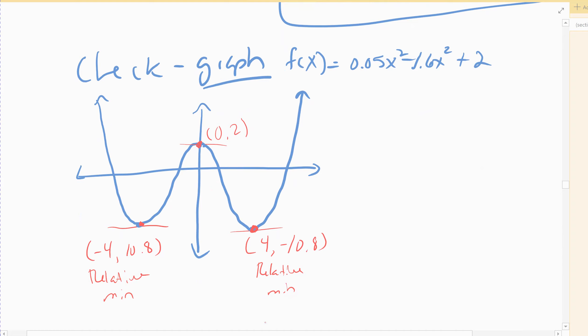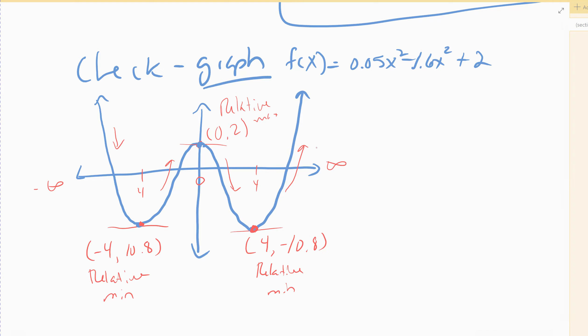If you look at the graph, this is a relative minimum — actually an absolute minimum as well, which we'll get to in later sections. From negative infinity to negative 4, the function is decreasing. Between negative 4 and 0, it is increasing. Between 0 and 4, decreasing. From 4 to infinity, increasing. All answers check: stopping points, maximums, and minimums are where I said they'd be. The graph confirms everything is correct. We'll stop here and do the second example in the next video.